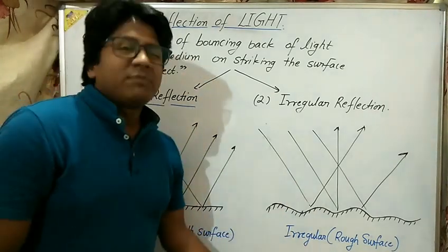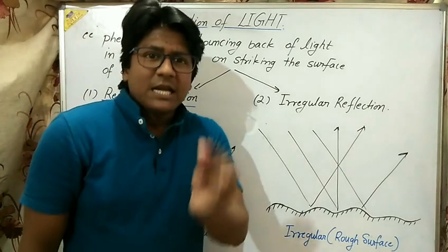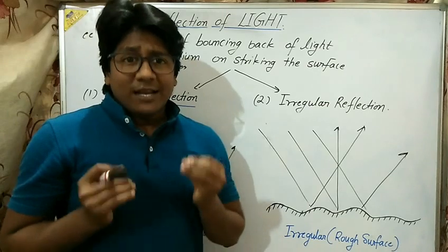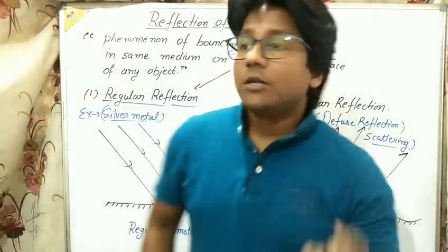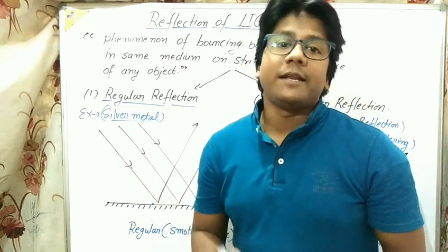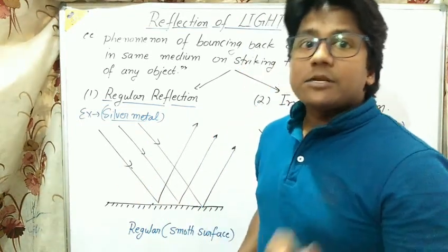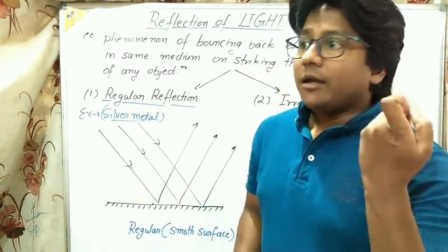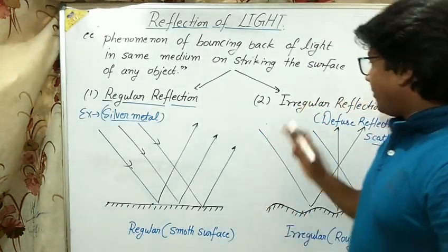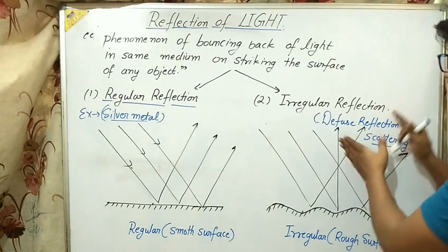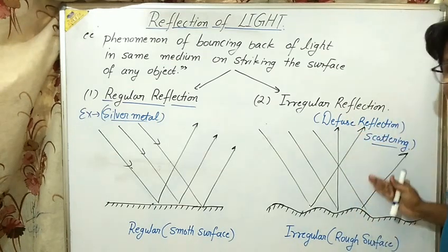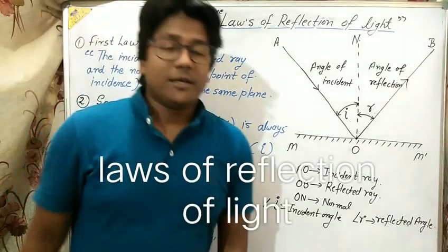This is the major reason why a regular surface creates an image and irregular surfaces don't create an image — or if they do, the image is very less visible and has low intensity. For all known metals, silver is one of the best regular reflecting surfaces — it creates a clear, high-intensity image. Irregular reflection is also called diffuse reflection, or scattering of light.